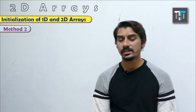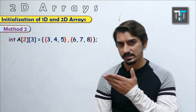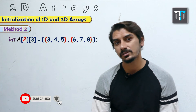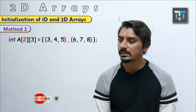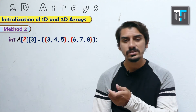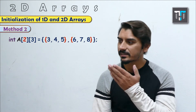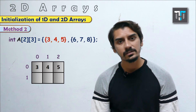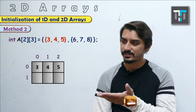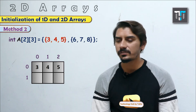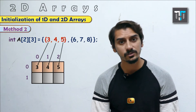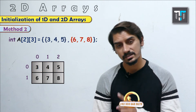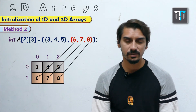There is also a more readable second method of initialization. You declare int a[2][3] and then use curly braces with nested curly braces for each row: {3, 4, 5} for the first row and {6, 7, 8} for the second row. This makes it clear that 3, 4, 5 belong to the first row and 6, 7, 8 to the second row.